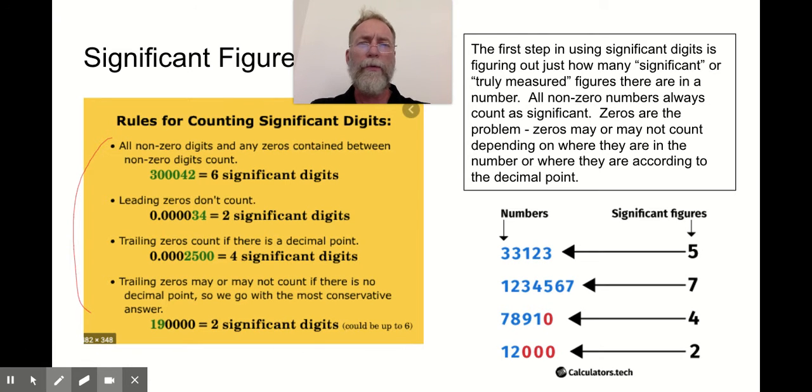And usually the first time we go through the rules, students, they look at it and they say that that is the dumbest thing I have ever heard. You know, I understand that numbers count, like the numbers one, two, three, four, five, six, seven, eight, nine count. But then you have all this mumbo jumbo about zeros, trailing zeros, leading zeros, trapped zeros, or zeros between digits. And so we have to get used to these rules first.